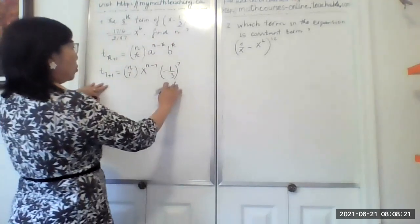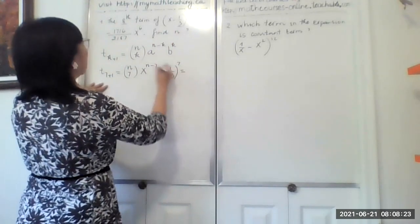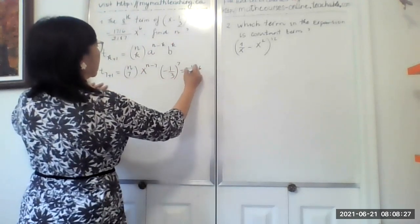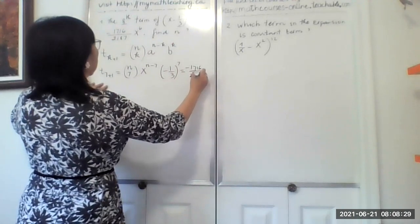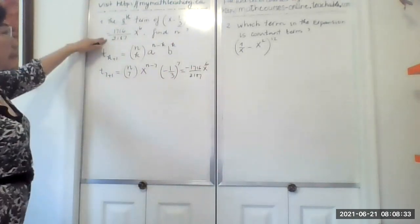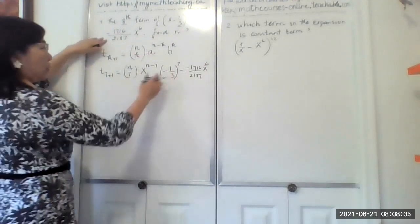Now we know this answer will be minus 1716 over 2187 x to power 6. That's the answer. That's the given. So let's look at this.